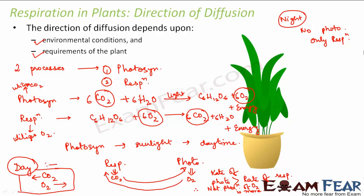Therefore, the direction of diffusion in plants varies with the environmental conditions — whether it is daytime or nighttime, and whether sunlight is present or not, because photosynthesis depends on environmental conditions. The second factor is the requirements of the plant: if the plant wants to perform photosynthesis, it needs more carbon dioxide; if the plant wants to respire, it needs more oxygen. These two factors — environmental conditions and requirements of the plant — govern the direction of diffusion.